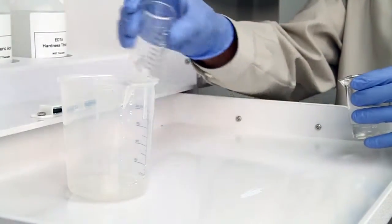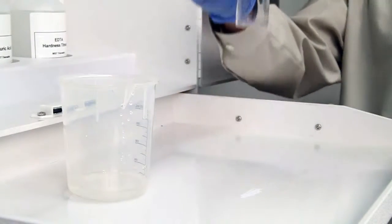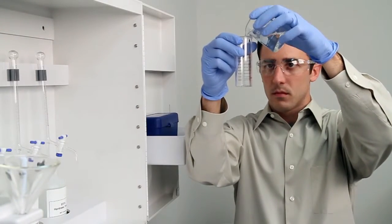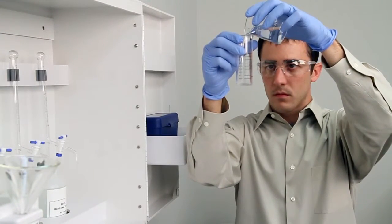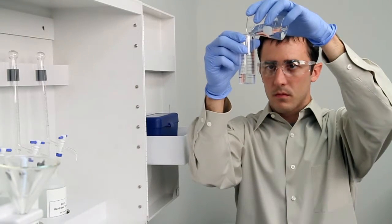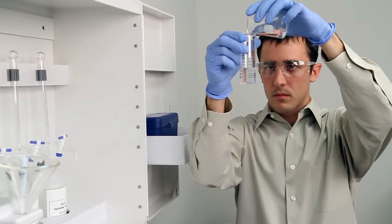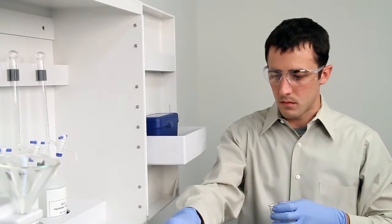Hold the vial close to eye level while pouring to ensure you have an accurate sample. Place the vial on a level surface and bend down to eye level to verify that you have collected an accurate sample. The slightest change in sample size will lead to inaccurate results.